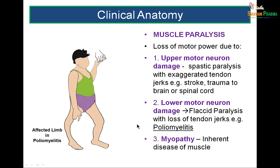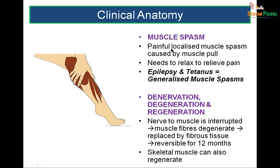Poliomyelitis causes paralysis — lower motor neuron damage causes flaccid paralysis with loss of tendon jerks. Upper motor neuron paralysis can occur in cerebral stroke or trauma to the brain or spinal cord. Myopathy is an inherent disease of muscle. Muscle spasms are cramp-like localized pains, requiring muscle relaxation to relieve. Epilepsy and tetanus are more generalized muscle spasms involving multiple muscle groups.